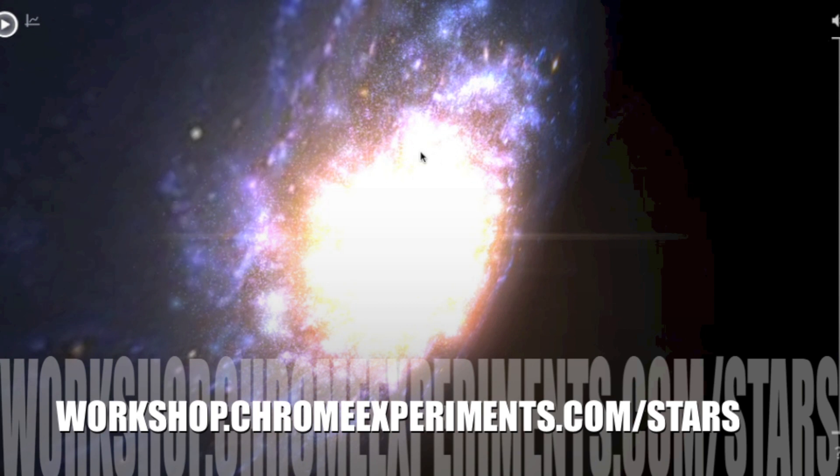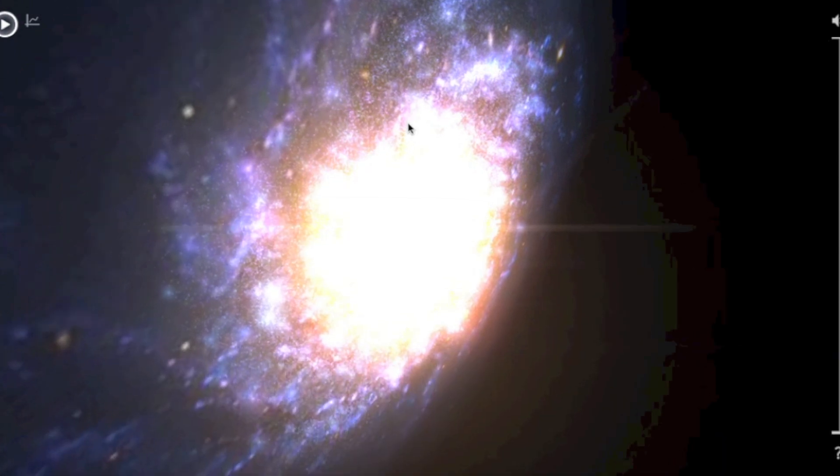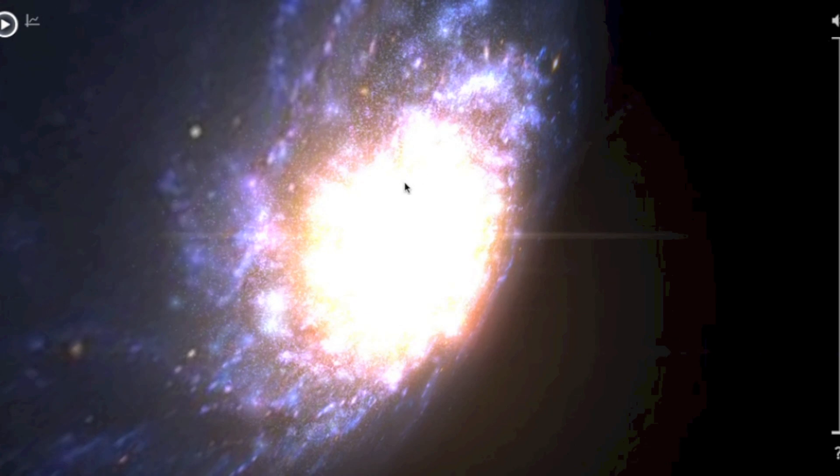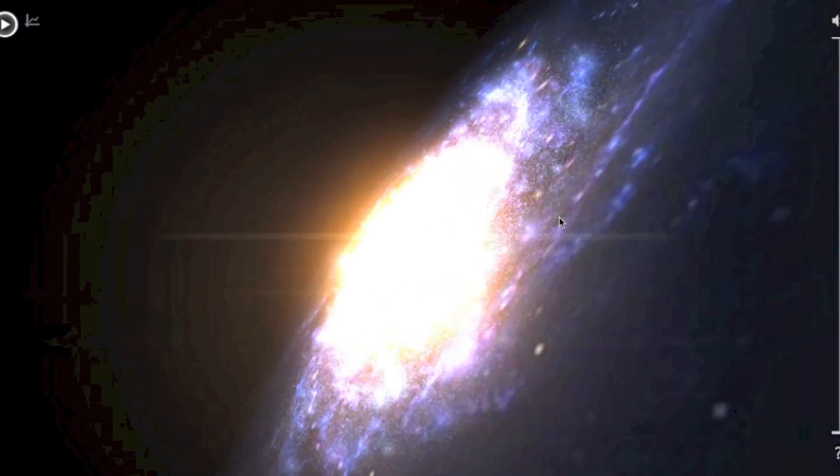Google has a new Chrome experiment called Thousand Stars that allows you to see our galaxy in a 3D map. You can zoom in and you can zoom out of the galaxy as well as turning it in whichever way you want.